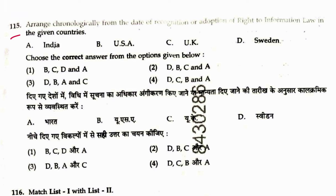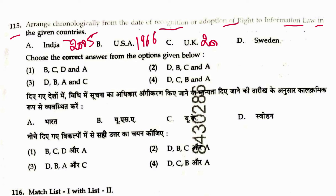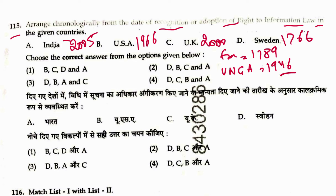Question 115: Arrange chronologically by date of recognition of right to information law in given countries. Sweden — 1766 (Access to Public Records Act). USA — 1966 (Freedom of Information Act). UK — 2000 (Freedom of Information Act). India — 2005 (Right to Information Act). Sequence is D, B, C, A. Answer is 2.